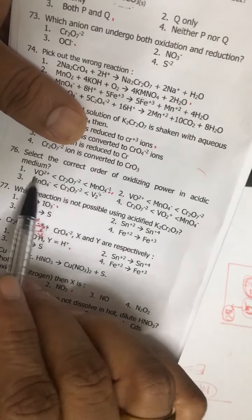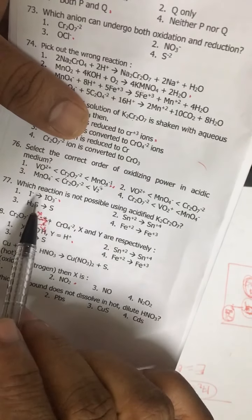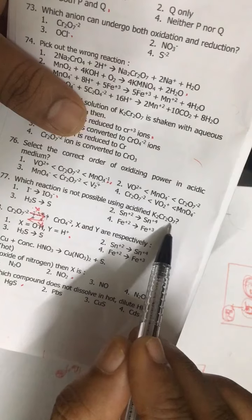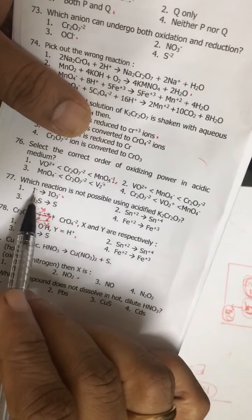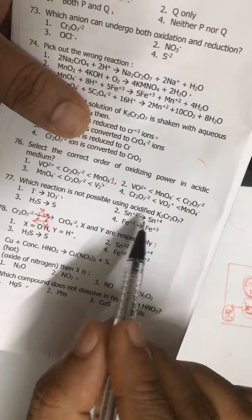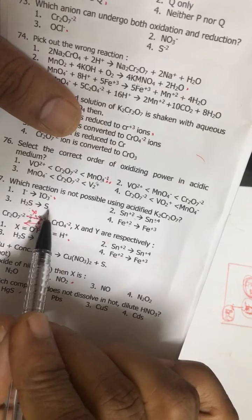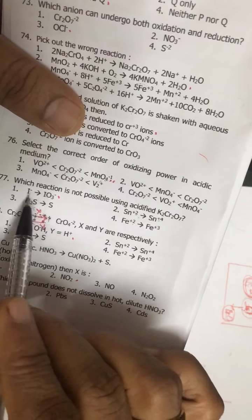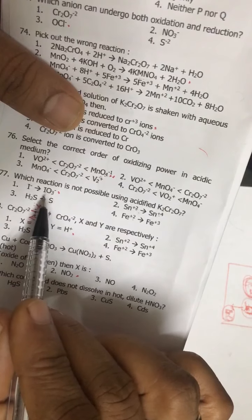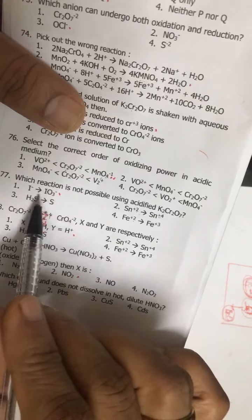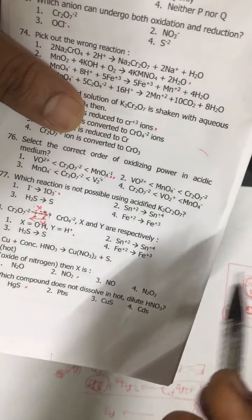So KMnO4 is the strongest oxidizing agent, then K2Cr2O7 - you just remember. Then this is VO2+, this is VO2+. Which reaction is not possible using acidic K2Cr2O7? See, normally when we oxidize any species, it is oxidized to the next higher oxidation state: plus 2 to plus 4, plus 2 to plus 3, minus 2 to 0. Here it is oxidized from minus 1 to plus 5.